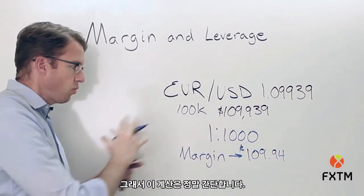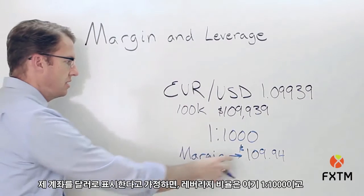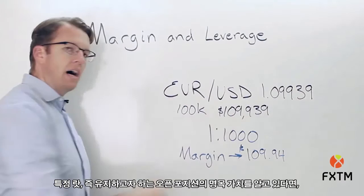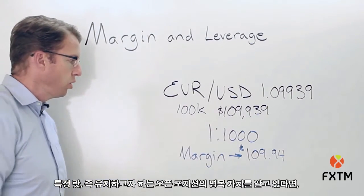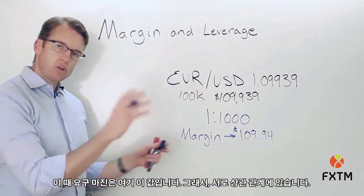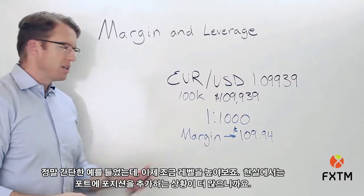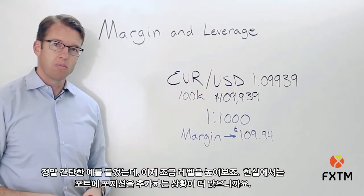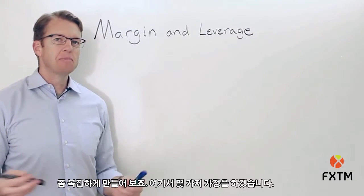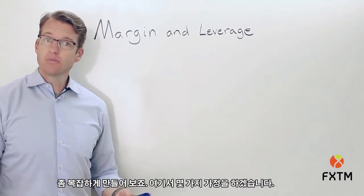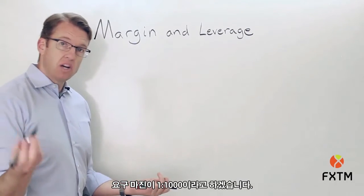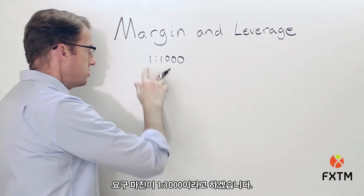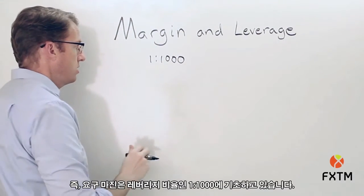This is a straightforward calculation: assuming my account is denominated in dollars with a leverage ratio of 1 to 1,000, I know the notional value of the position I want to hold open, so I can determine my margin requirement. One is really a function of the other. Now let's make this a little bit more advanced, as a trader is actually adding positions to their portfolio.